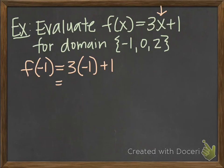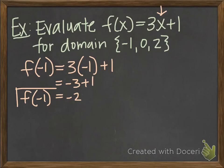So I'm just simplifying the function rule part. So 3 times negative 1 is negative 3 and then if I add 1 to that I get negative 2. So we say f of negative 1 equals negative 2. And what that means is when my input is negative 1, my output is negative 2.